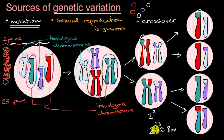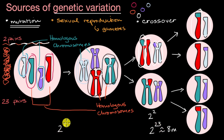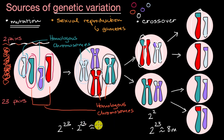These are the combinations for the gametes, and the gametes are haploid — they have half the DNA of a full organism. When the gametes combine, you're actually going to have 2 to the 23rd times 2 to the 23rd combinations just from sexual reproduction, and even more accounting for mutation and crossover. That leads to more than 70 trillion combinations just from these two parents.